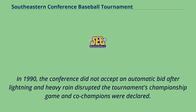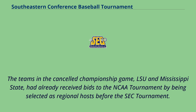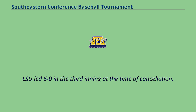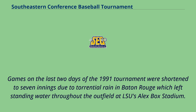In 1990, the conference did not accept an automatic bid after lightning and heavy rain disrupted the tournament's championship game and co-champions were declared. The teams in the canceled championship game, LSU and Mississippi State, had already received bids to the NCAA Tournament by being selected as regional hosts before the SEC Tournament. LSU led 6-0 in the third inning at the time of cancellation. Games on the last two days of the 1991 tournament were shortened to seven innings due to torrential rain in Baton Rouge, which left standing water throughout the outfield at LSU's Alex Box Stadium.